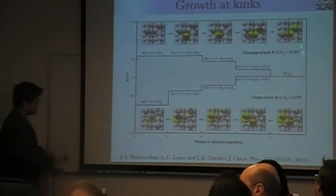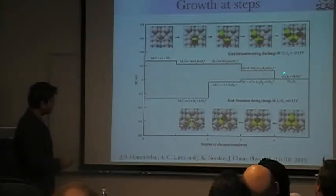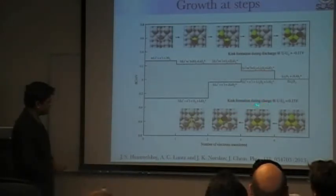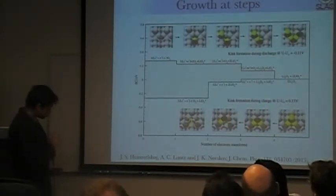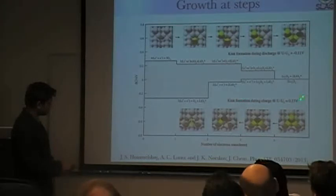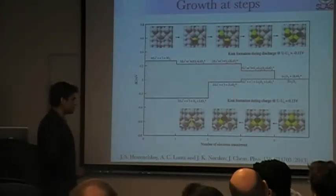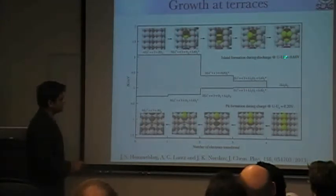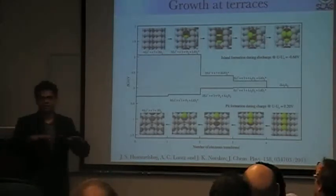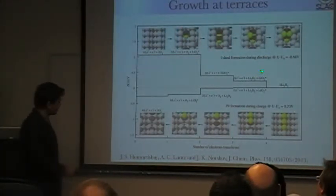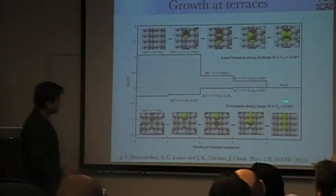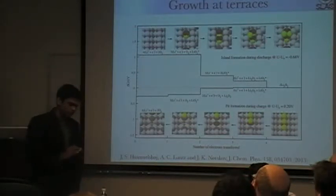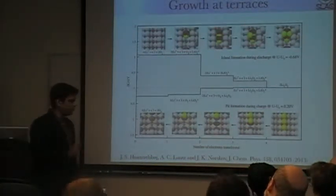You can discharge and charge at a kink site at very low overpotentials. On a step site the story is similar: you can discharge at about 0.1 volts overpotential and charge at about 0.15 volts. On a terrace, things get more complicated. To form an island on a terrace costs slightly higher overpotentials — 0.68 volts — because you must break the extended symmetry of the terrace site. Pit formation costs about 0.2 volts. The sites with the lowest overpotentials dominate, as stated earlier.